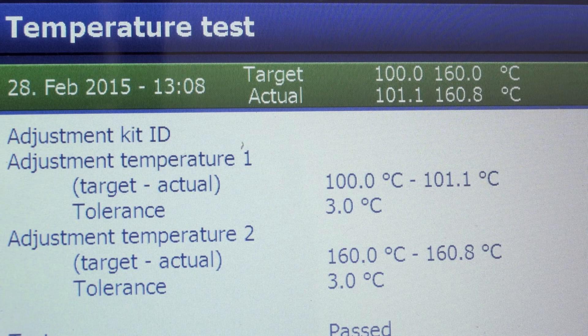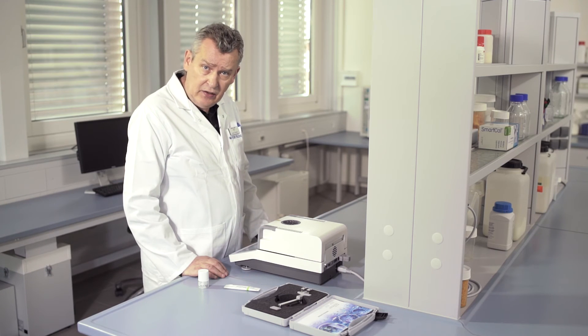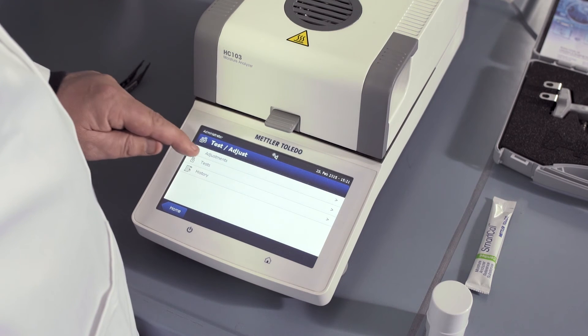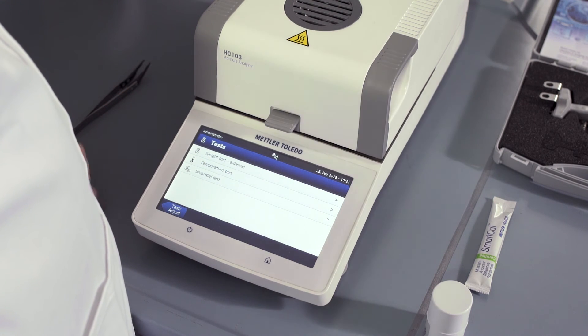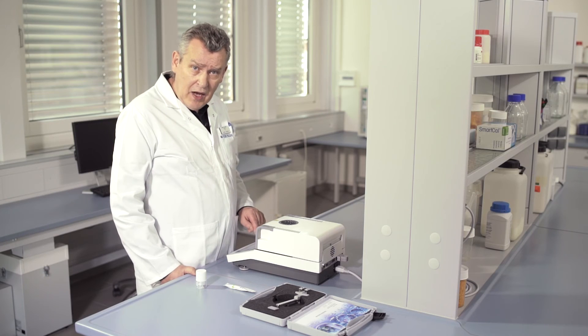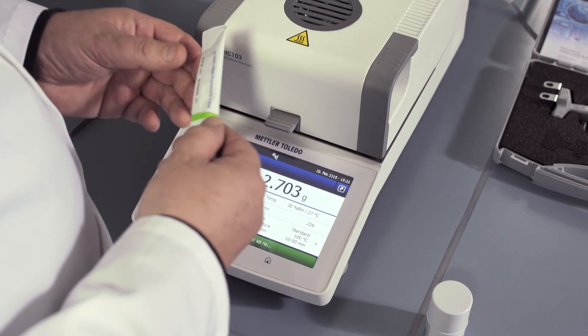To perform an overall instrument test using Smart Cal, select test adjust, then tests, and then press Smart Cal test. Enter the Smart Cal lot number found on the stick.